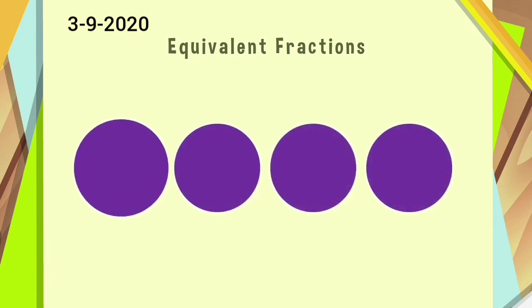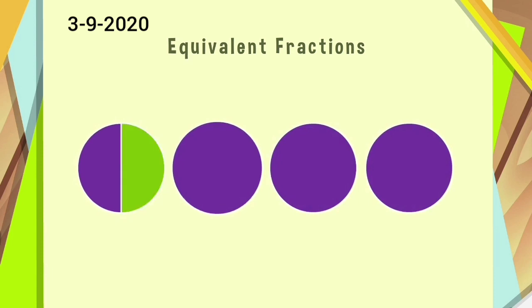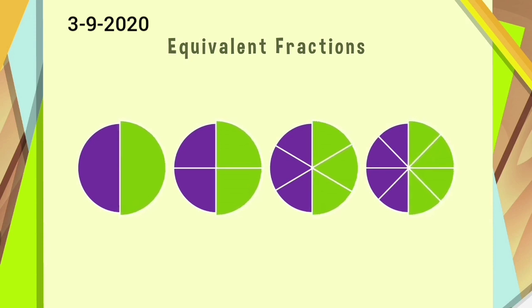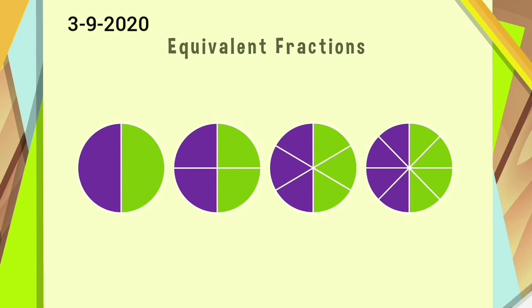Let us consider 4 circles. Divide the first circle in 2 equal parts and shade 1 part. Divide the second circle in 4 equal parts and shade 2 parts. Now, divide the third circle in 6 equal parts and shade 3 parts. Lastly, divide the fourth circle in 8 equal parts and shade 4 parts.